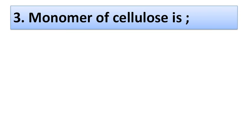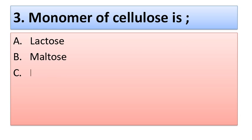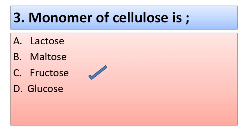Question number three: the monomer of cellulose is — option A: lactose, option B: maltose, option C: fructose, option D: glucose. The correct option is option D, glucose.